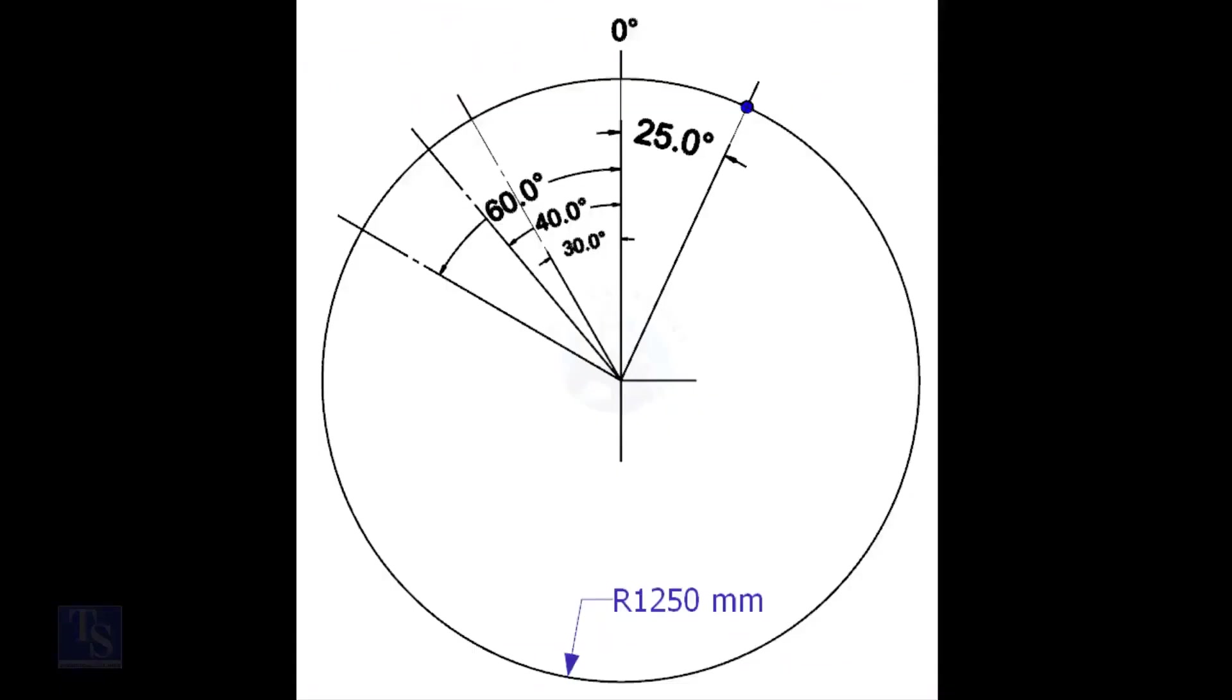Mark the zero degree line as per the drawing. Zero degree is rotated 25 degree anti-clockwise from the center of the weld joint.